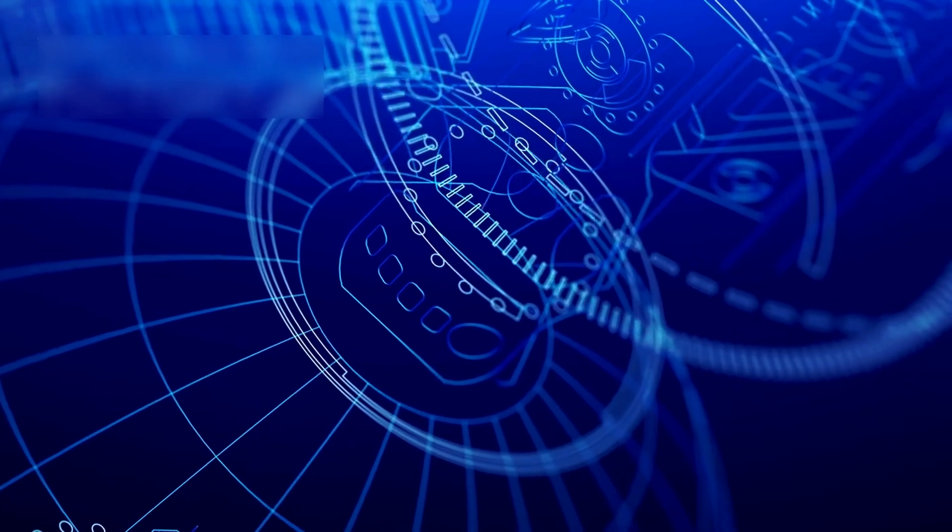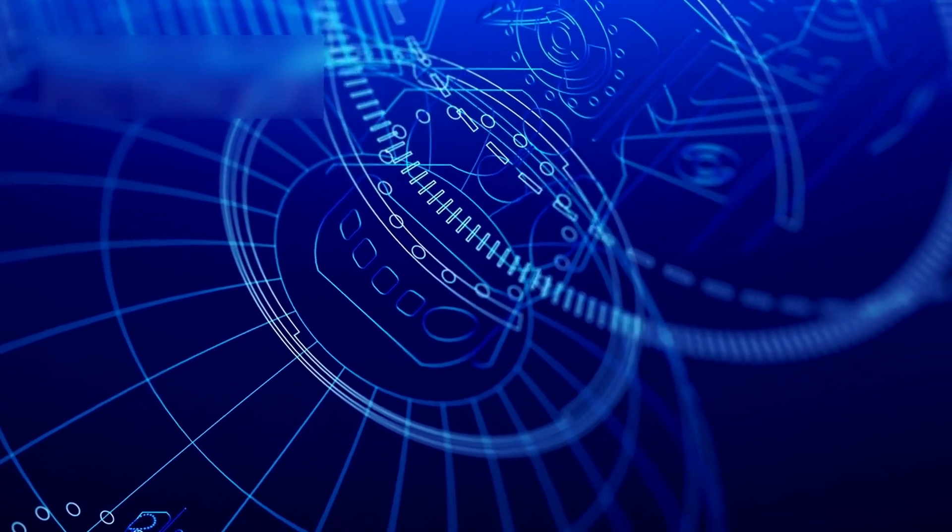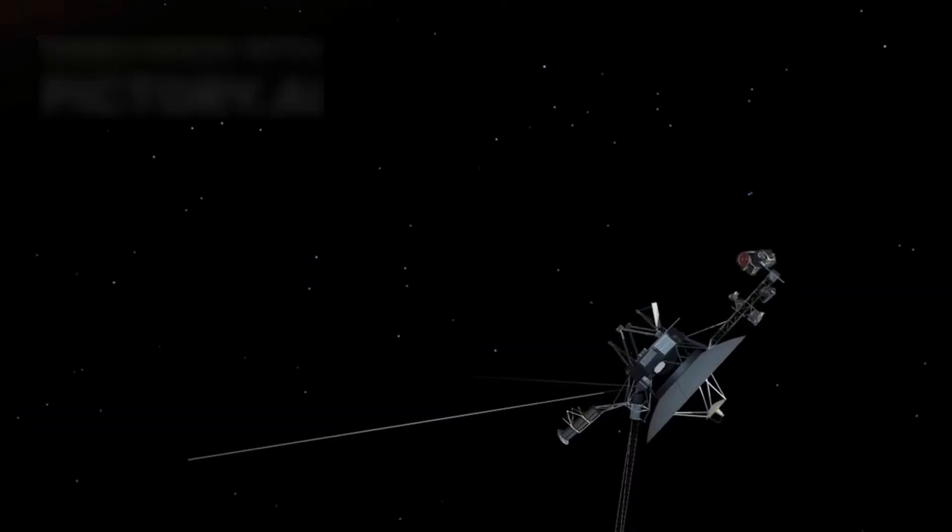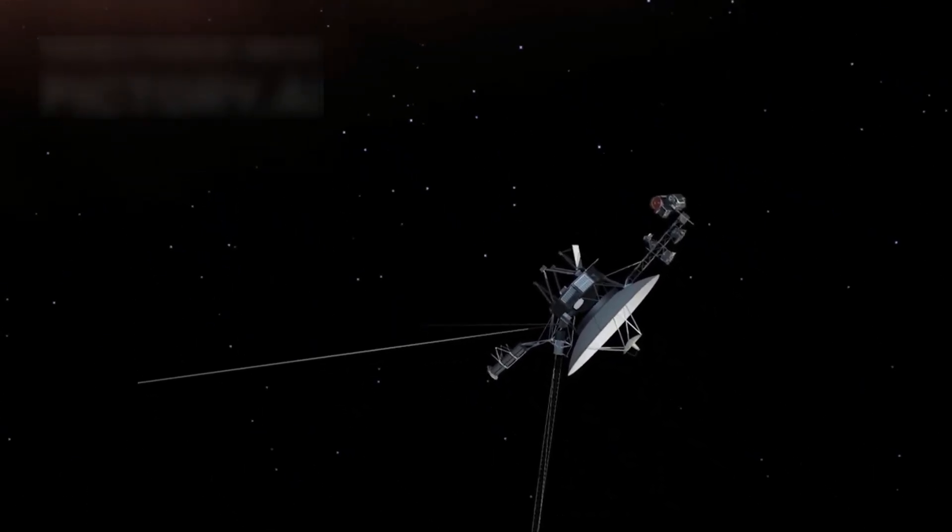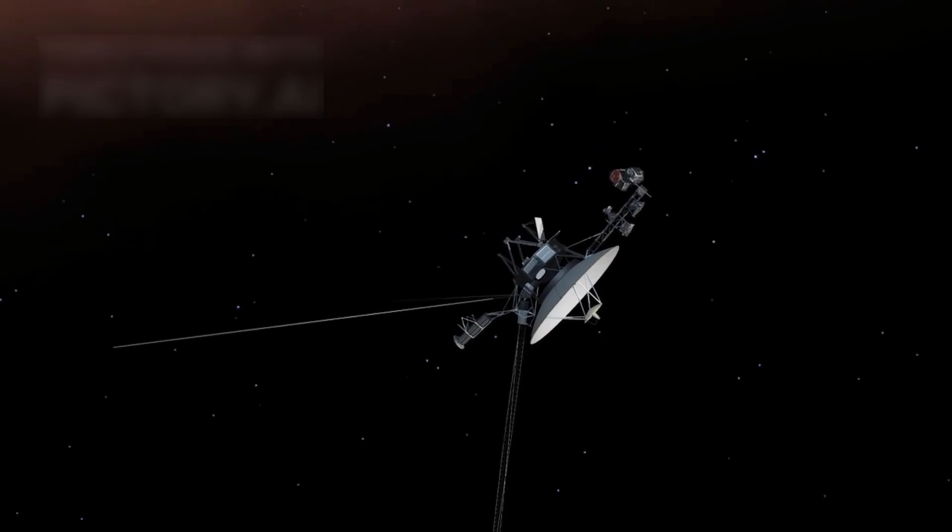Its weak transmitter is barely a whisper, yet NASA's deep space network hears it. In 2012, Voyager 1 crossed into interstellar space, breaking beyond the heliosphere, the Sun's protective bubble.